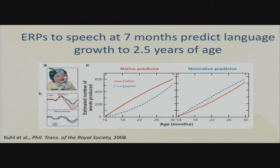Using native language predictors — a native contrast on the left and a non-native contrast on the right — and doing median splits, you see that the better half of the distribution at native language discrimination at seven months are much faster in word acquisition than the lower half. But kids who are still good at seven months at non-native language discrimination are actually slower to develop language, because they haven't sorted out what they're supposed to be paying attention to.